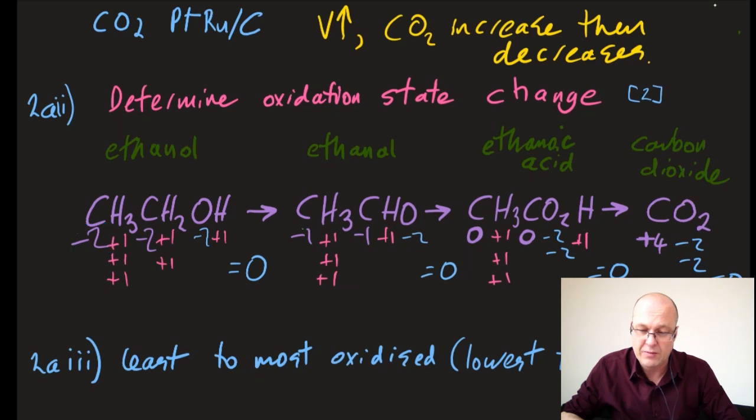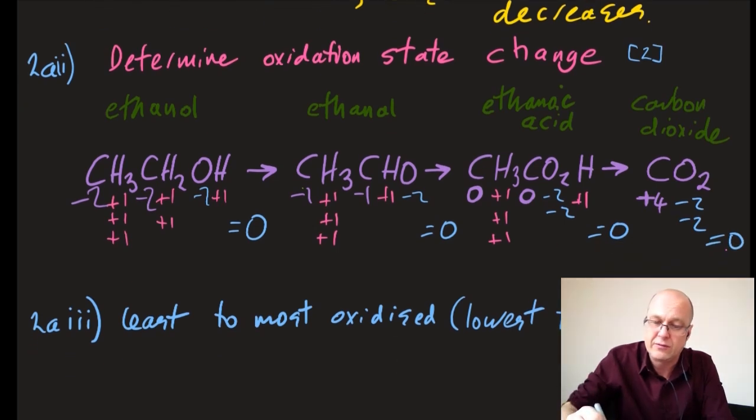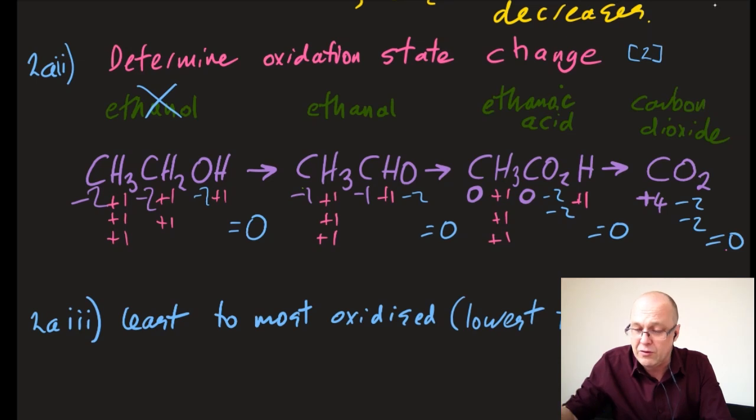Next question: only 40% of people got that right. Which is the least to the most oxidized of the products? If you're looking at products, exclude the ethanol. I've actually put them in order, so it's lowest to highest oxidation number for carbon: -1, zero, +4.